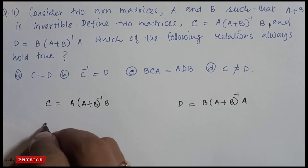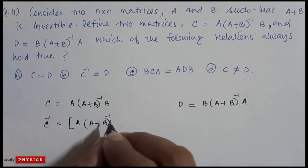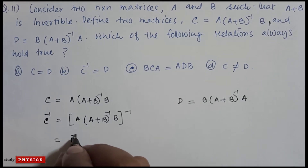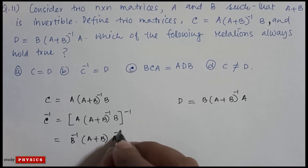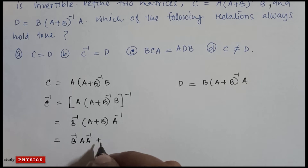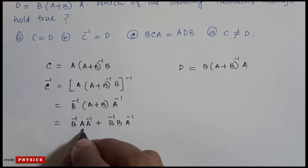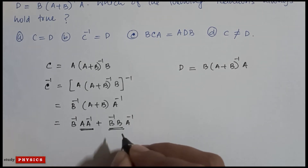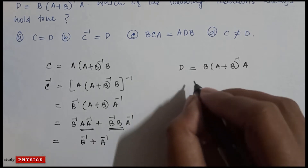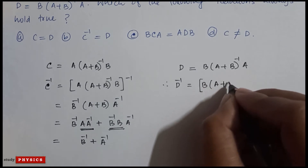First we'll find C inverse. C inverse is [A(A+B)⁻¹B] whole inverse, so we get B inverse (A plus B) A inverse. Multiplying out: B inverse A into A inverse plus B inverse B into A inverse. Here A into A inverse is the identity matrix, and B into B inverse is also identity, so we get B inverse plus A inverse.